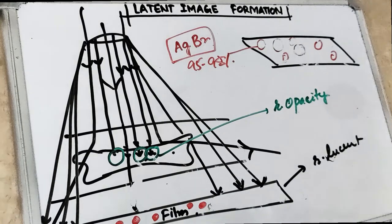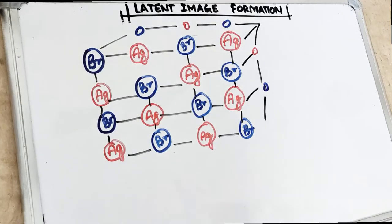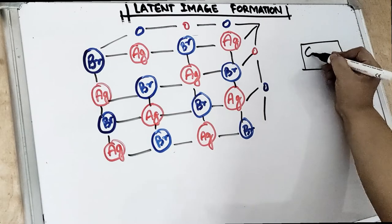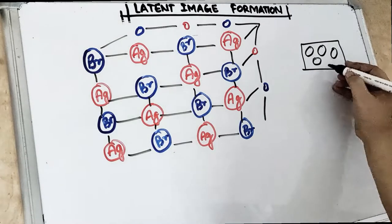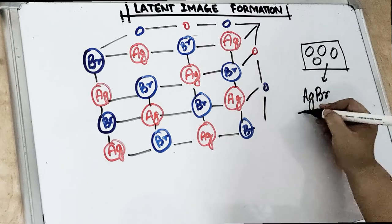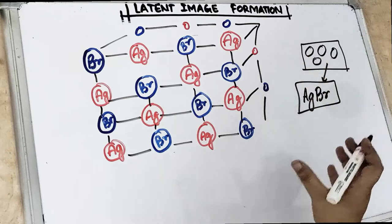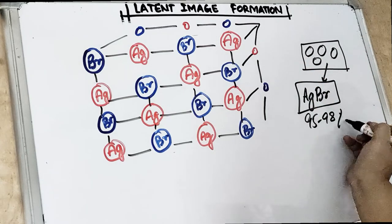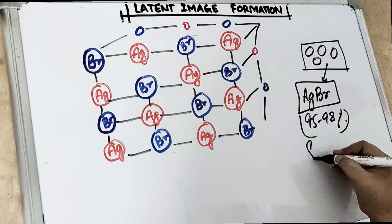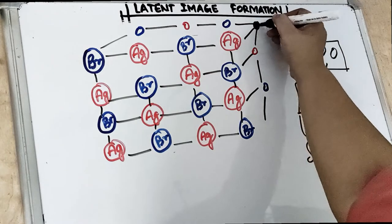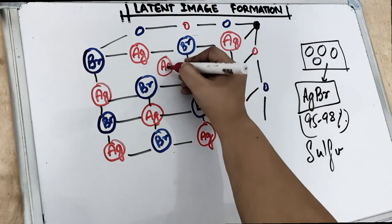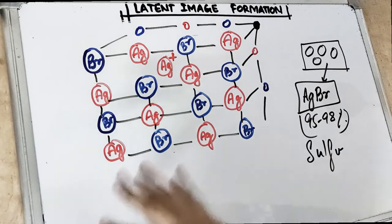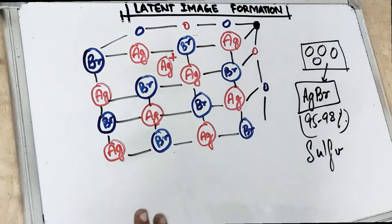Now let's talk about the latent image formation formally. In the emulsion layer we have got silver halide grains in the gelatin matrix. These silver halide grains contain — as we talked about in the composition — 95 to 98 percent AgBr, which is silver bromide, with sulfur contamination. Also, there are free Ag ions which are present — silver ions which are floating, dancing, enjoying in this crystal lattice, who are free, who are not caged.